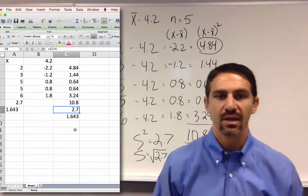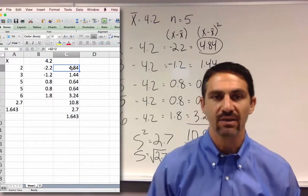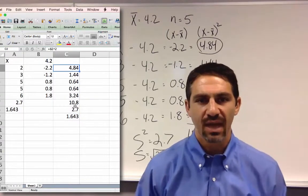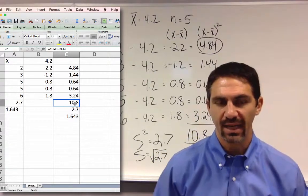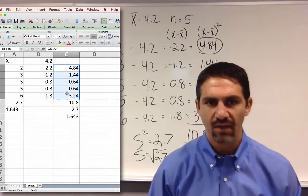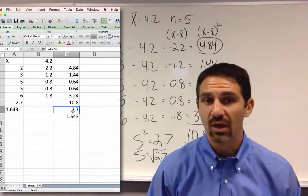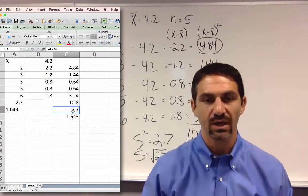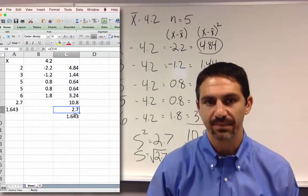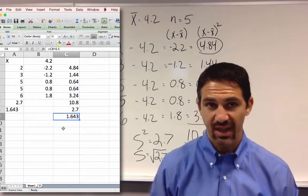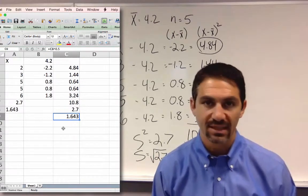You can see that I did the same thing in Excel to make my life a little bit easier. Here's where that 10.8 came from—that's the sum of all of these values. And then when I divided by 4, because 5 minus 1, it gave me 2.7. The standard deviation then is 1.643.